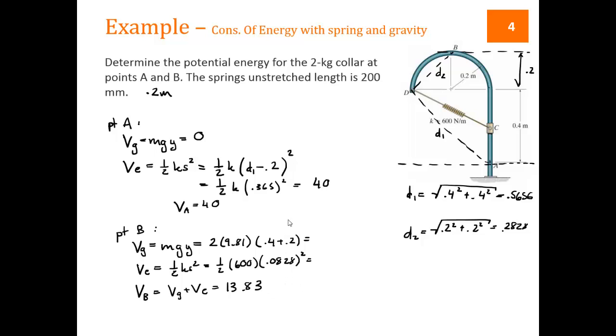We picked a convenient datum so that one of our gravitational potential energies was 0. We found the elastic potential energy based on the geometry of the problem. And then we added them together when we needed to, to find the total potential energy.